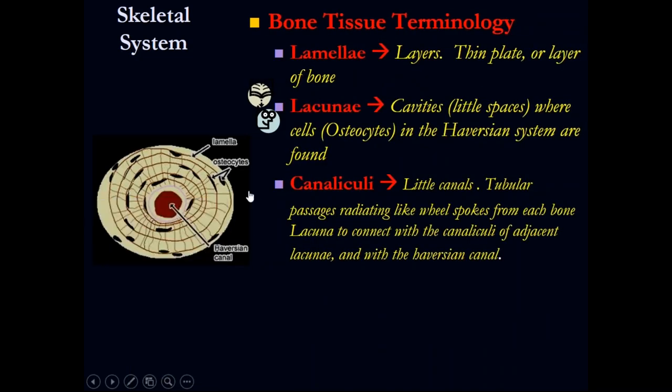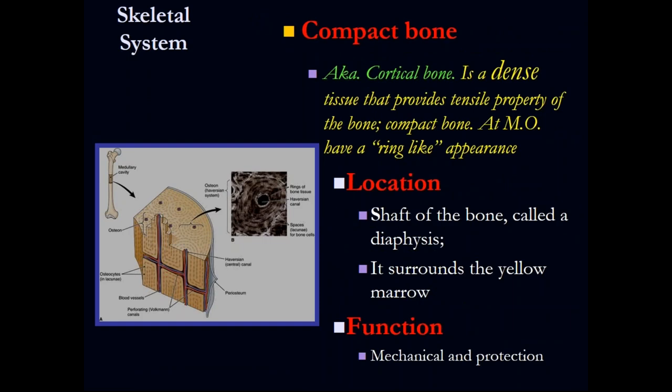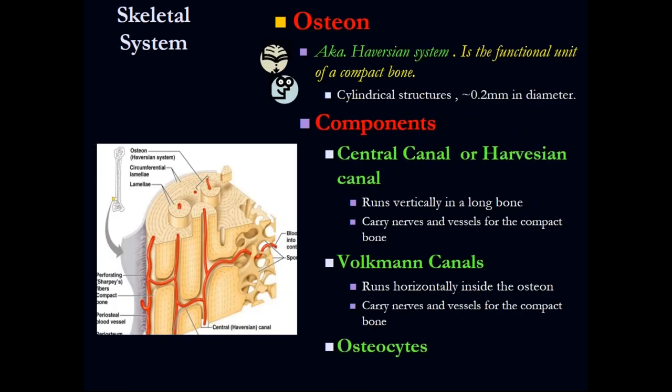We have osteocytes, which are mature osteoblasts. Osteoblasts are young bone cells that produce the deposit of calcium in the bones. Osteocytes function in the maintenance and repair of the bone. Osteoclasts take calcium from the bones and release it back into the blood. The osteoblast is activated by calcitonin, and the osteoclast is activated by PTH — the parathyroid hormone.